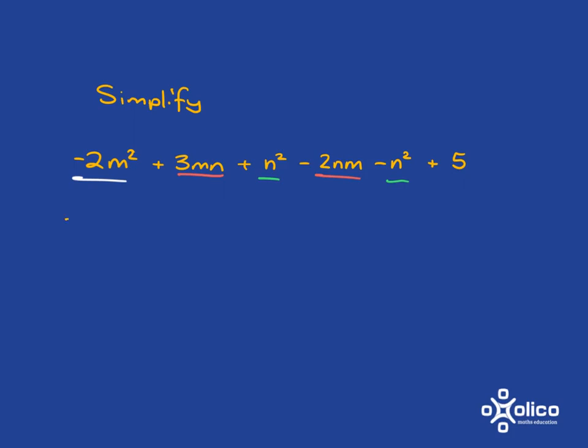Now we go through and sort it out. This negative 2m squared doesn't have a partner, so it just stays. Then we deal with 3mn subtract 2mn. 3 minus 2 is 1, one lot of mn, which we just write as mn.